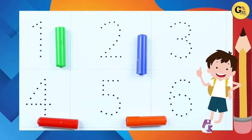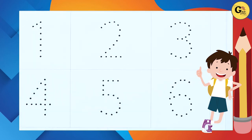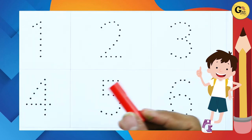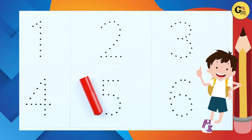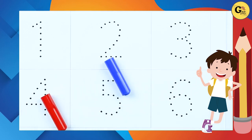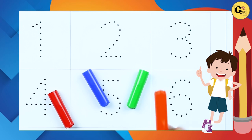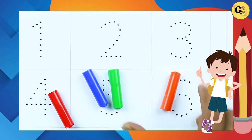Hello friends! Today we learn numbers 1 to 10 with some colors: red color, blue color, green color, orange color.